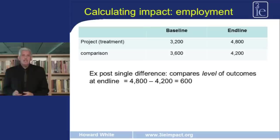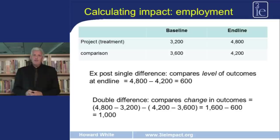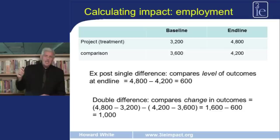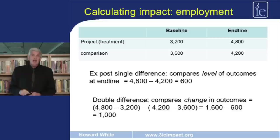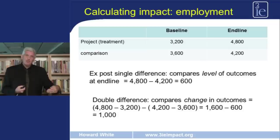If we have baseline data, we can calculate the double difference impact estimate, which is a better estimate. Rather than comparing outcome levels, the double difference compares the change over time. The change in employment in project areas is 4,800 minus 3,200, which equals 1,600. The change in comparison areas is 4,200 minus 3,600, which equals 600. So the double difference impact estimate is 1,600 minus 600, which equals 1,000. This estimate is more robust because it irons out differences in baseline employment levels between project and comparison areas.